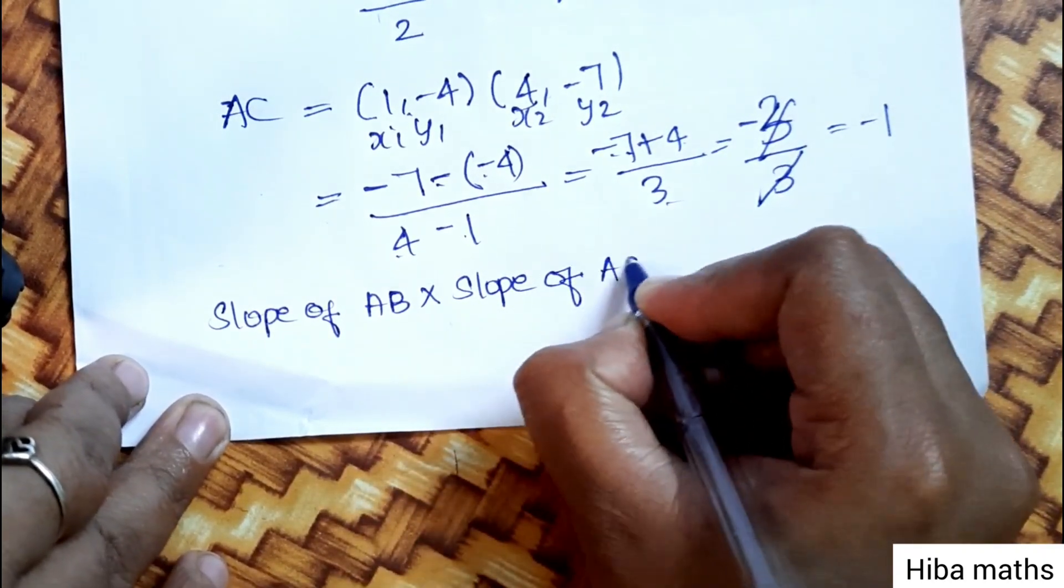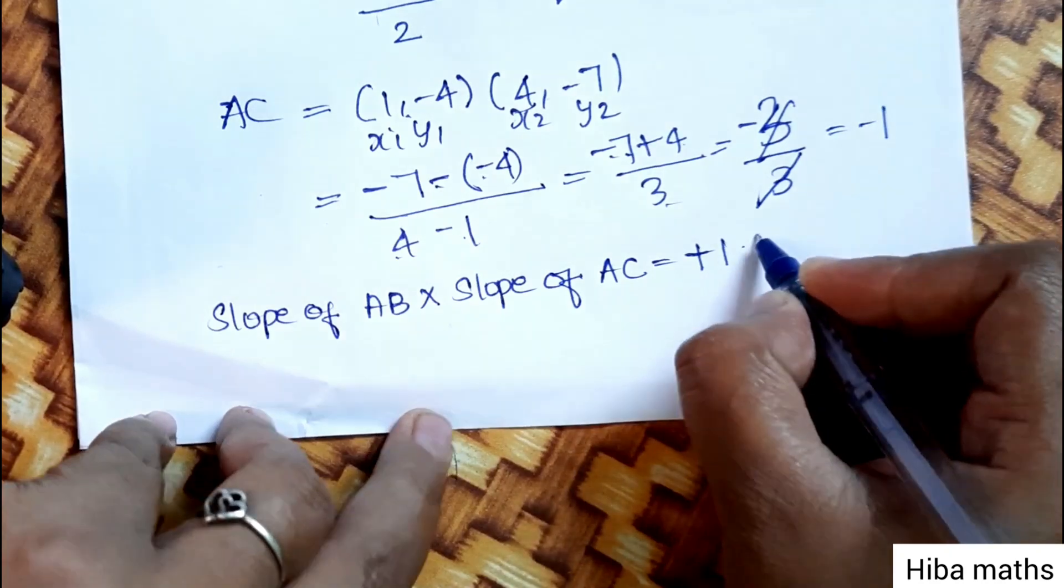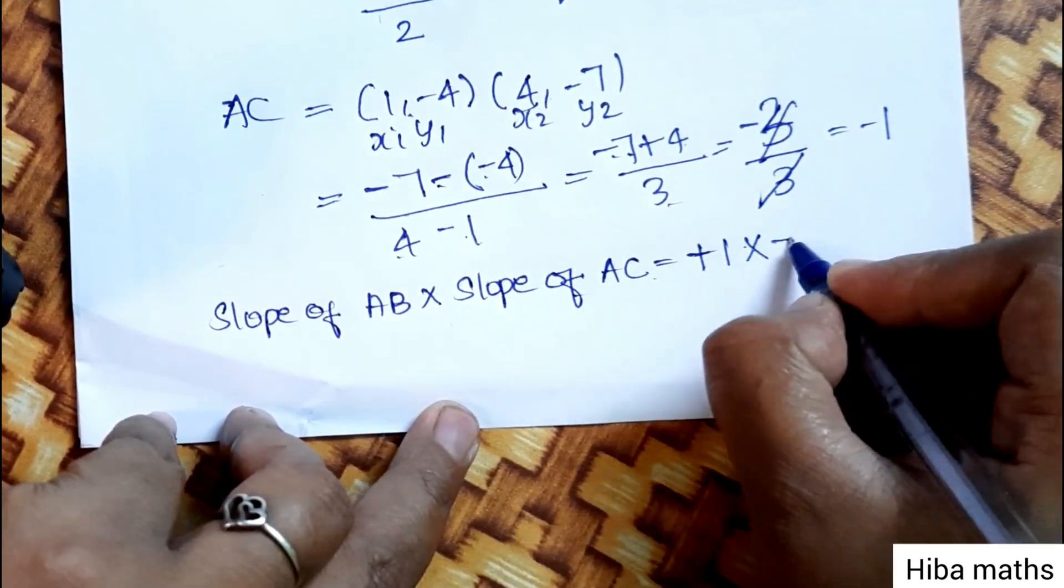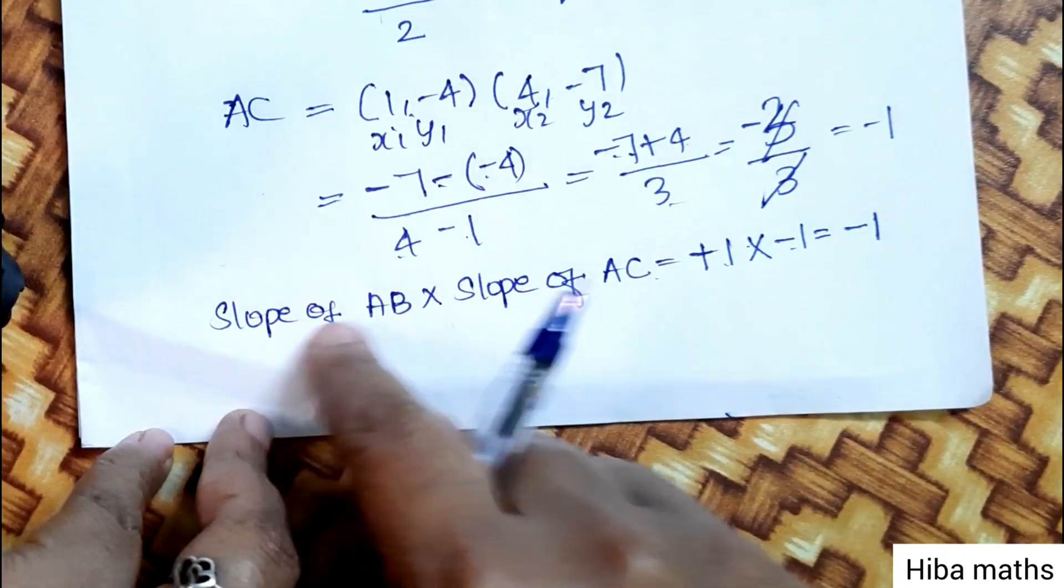Slope of AB into slope of AC. AB value is plus 1, AC value is minus 1, so the product is minus 1.